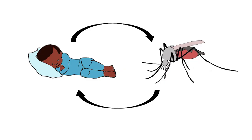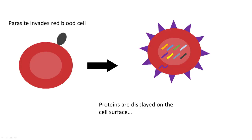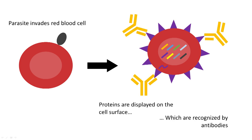Malaria is an infectious disease caused by a parasite that can infect both humans and mosquitoes. When the parasites are inside red blood cells, they produce proteins and put them on the surface of the red blood cell, and those can be detected by our immune system to kill the cell which contains the parasite.